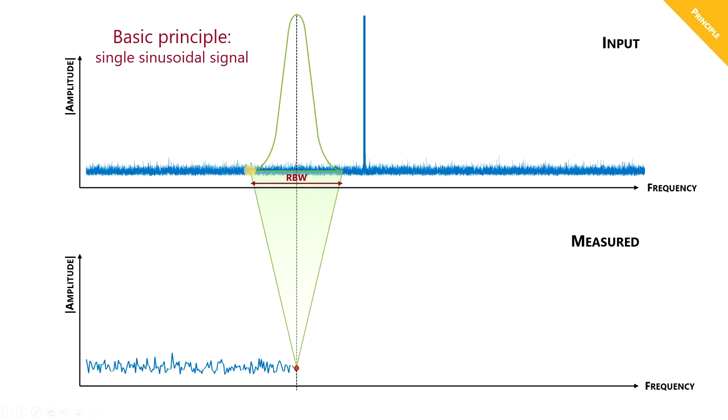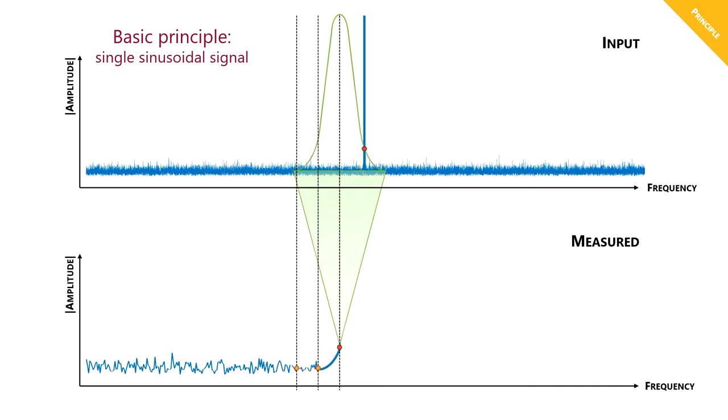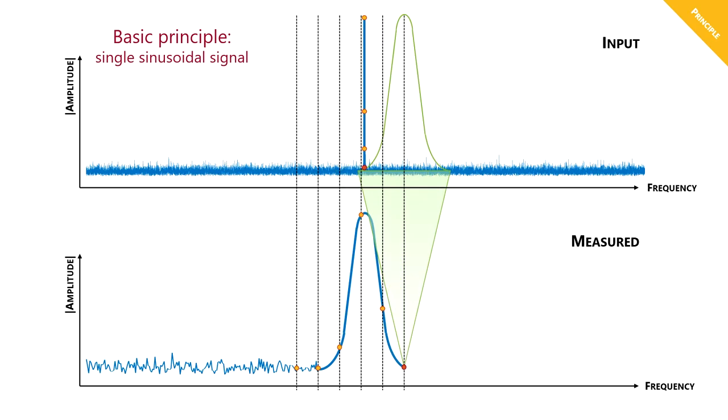Now, as our bandpass filter is tunable, we can sweep our filter through all frequencies of the input signal, as shown in this short animation. In this way, if we apply a single sinusoidal signal, we will see the shape of our filter on the display. Therefore, the narrower our RBW is, the higher is the resolution in frequency.